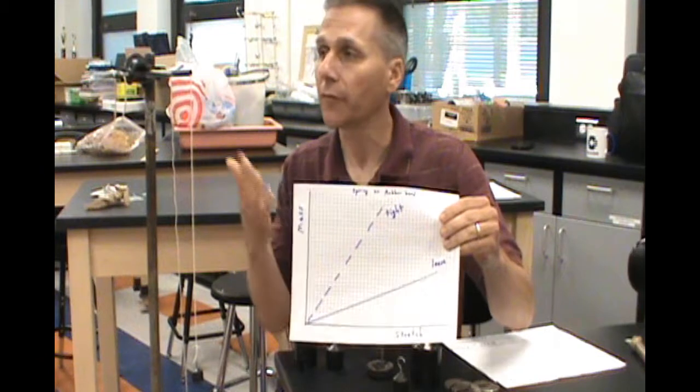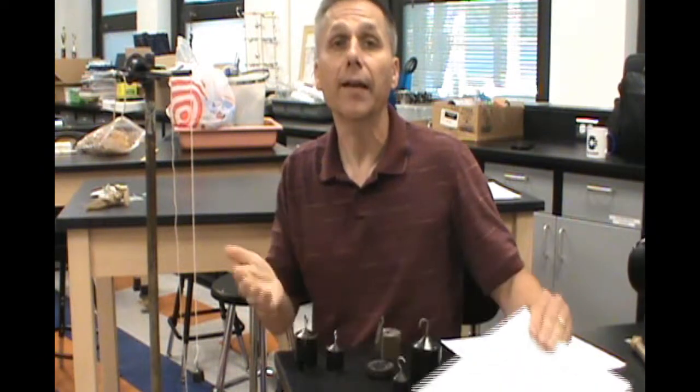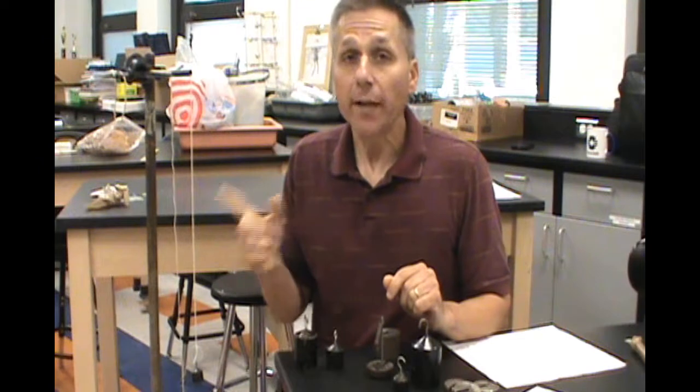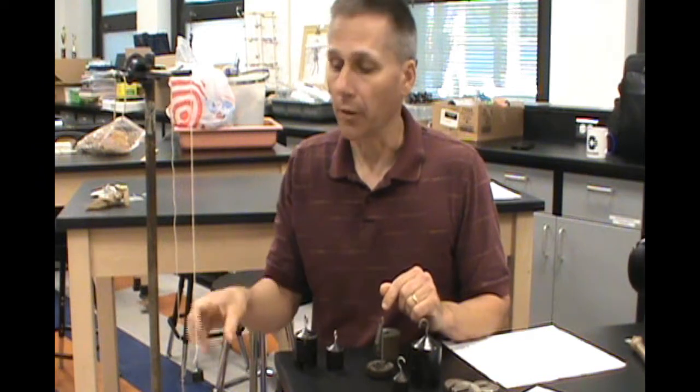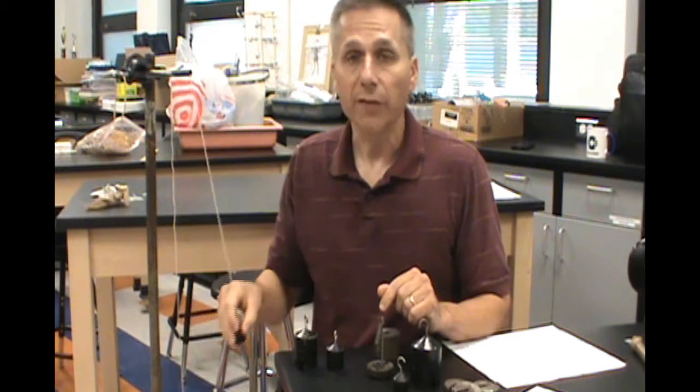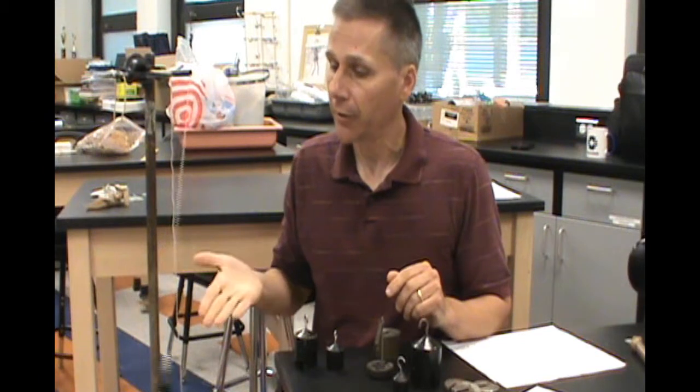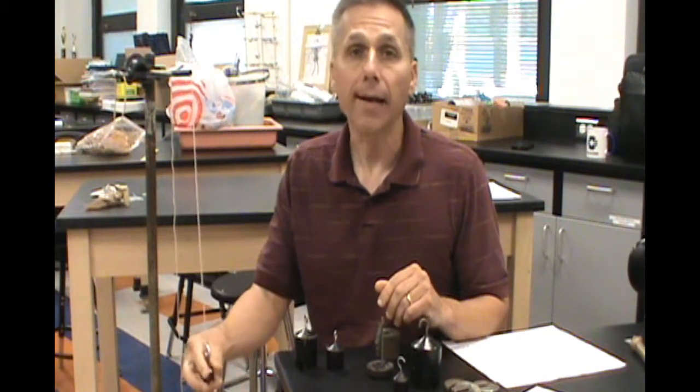You can have students do this before you talk about springs or rubber bands or elastic things. Let them discover it — let them start thinking like a scientist, thinking about different kinds of behaviors and characteristics. A second thing you can do is make a connection between springs and rubber bands along with something like a pendulum, which is another way to keep time and make clocks, repeating its swing back and forth.